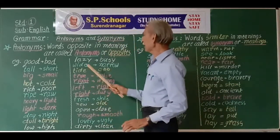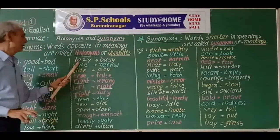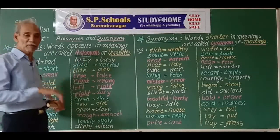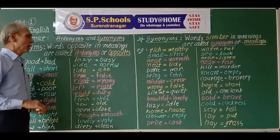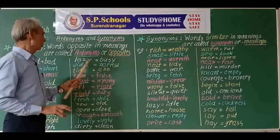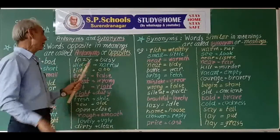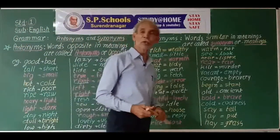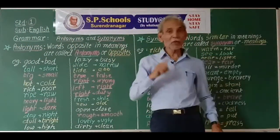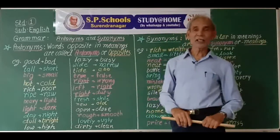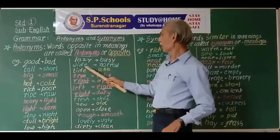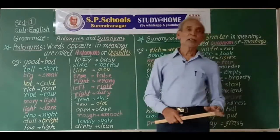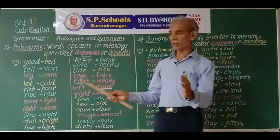Similarly, busy means a person who is active, working continuously. Wide and narrow are opposites. The road was very wide, while the street was very narrow.